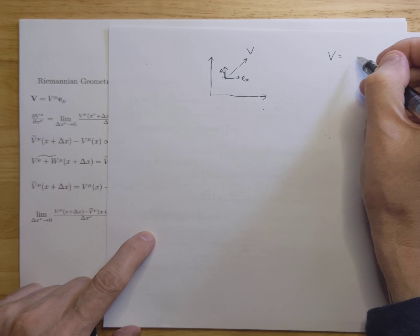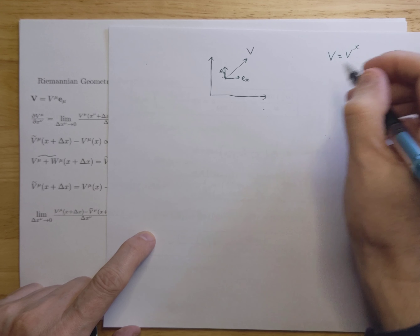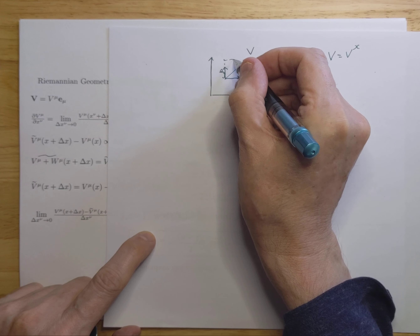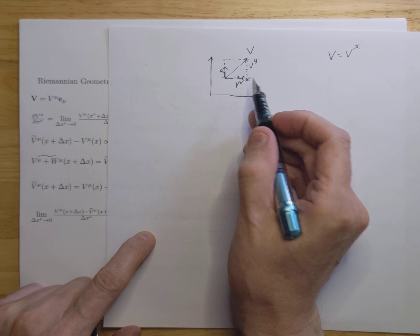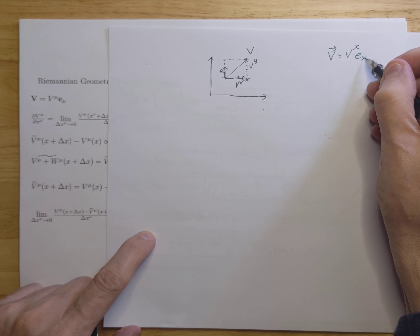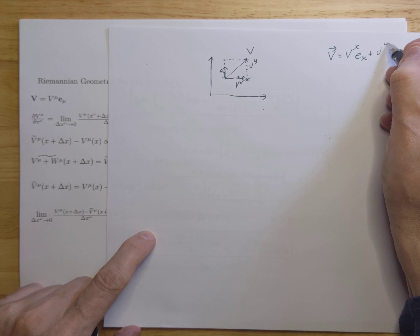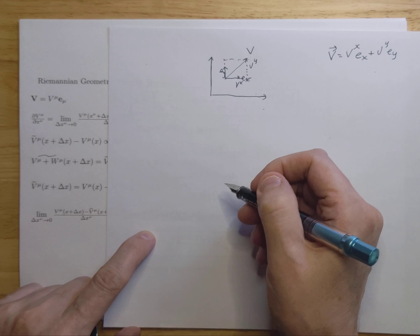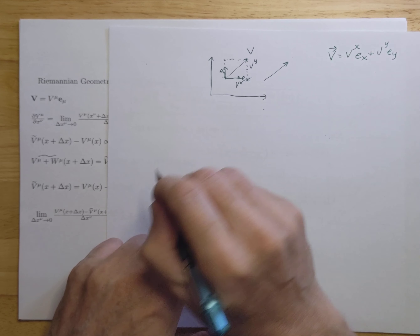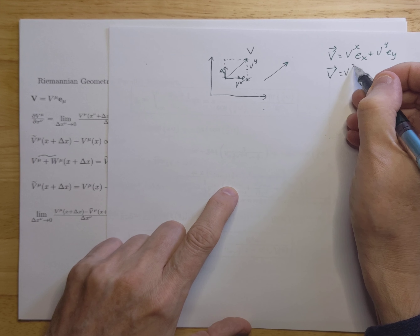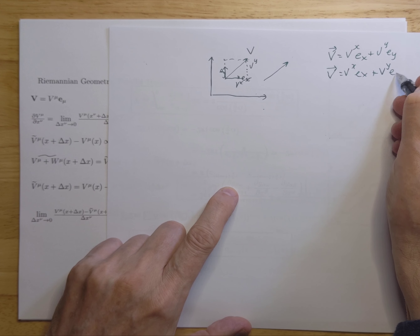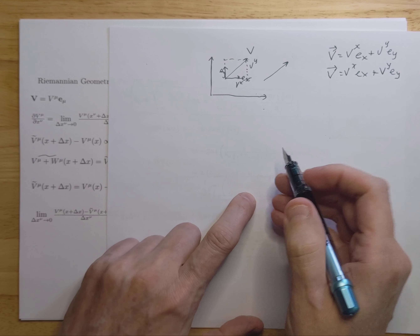Your vector v can be expressed as v_x e_x, where v_x is that component and v_y is the other component. So vector v equals v_x e_x plus v_y e_y — that's how you represent a vector in Euclidean space. If you move that vector to another location, you still get exactly the same components and the same basis vectors, because e_x and e_y will not change, and so will v_x and v_y.